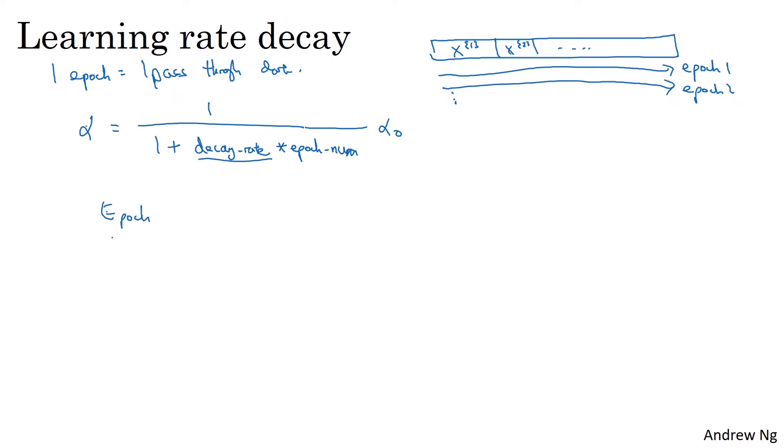If you take several epochs, so several passes through your data, if alpha zero is equal to 0.2, and the decay rate is equal to one, then during your first epoch, alpha will be one over one plus one times alpha zero. So your learning rate will be 0.1. That's just evaluating this formula when the decay rate is equal to one and the epoch number is one.